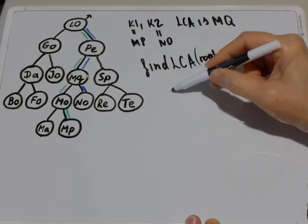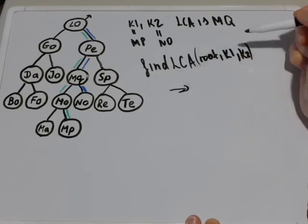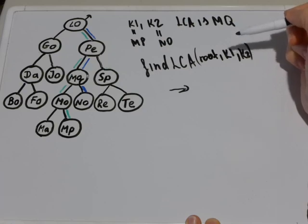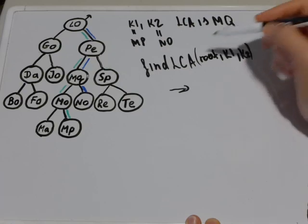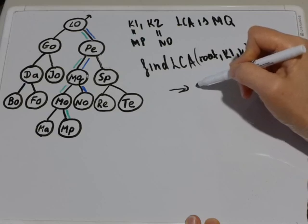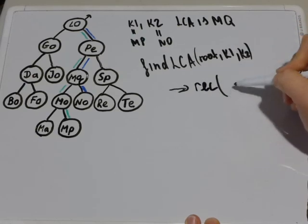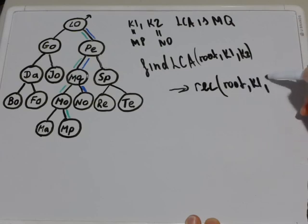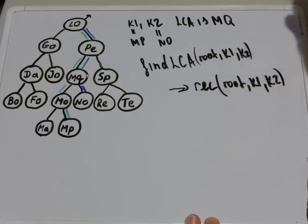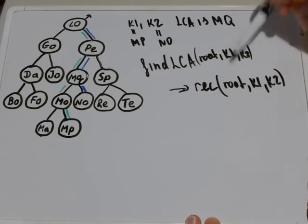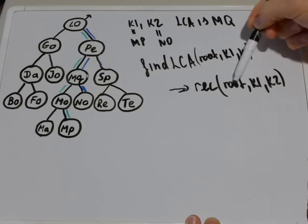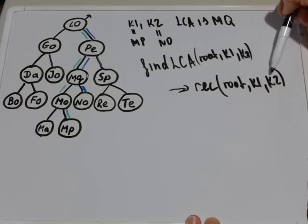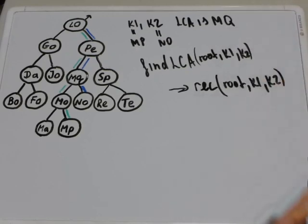Inside this function you need to call another helper function that will return you the result that you're going to print out. And this helper function will be a recursive function that takes root and also it takes key1 and key2. And it is implemented in the same way as find function except it compares both key1 to the current pointer and key2 to the current pointer's keys.